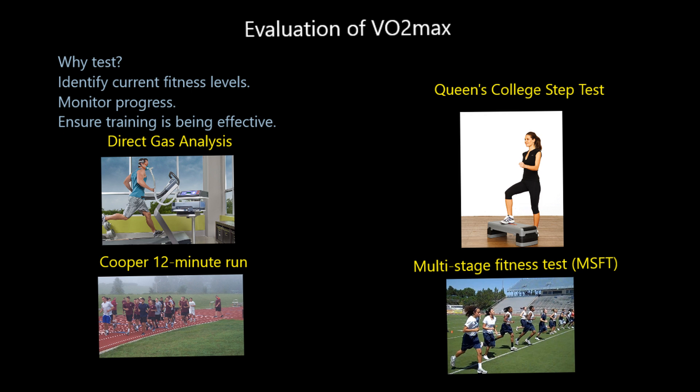We're going to look at four methods and the advantages and disadvantages of each. We can do something called direct gas analysis, the Queen's College Step Test, the Cooper 12-minute run, or the multi-stage fitness test — also known as the bleep test. But at college level, you've got to be able to give it its full name: multi-stage fitness test, not the bleep test.